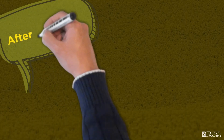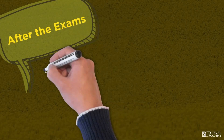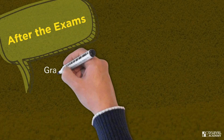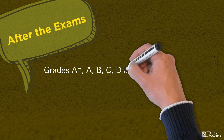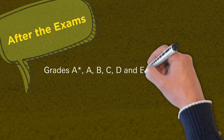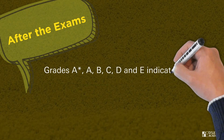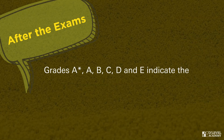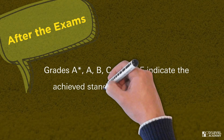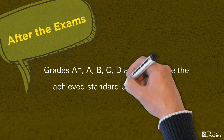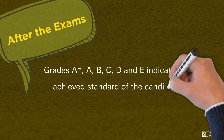After the exams, grades A*, A, B, C, D, and E indicate the achieved standard of the candidate in O-Level Agriculture 5038, where A* is the highest and E is the lowest.